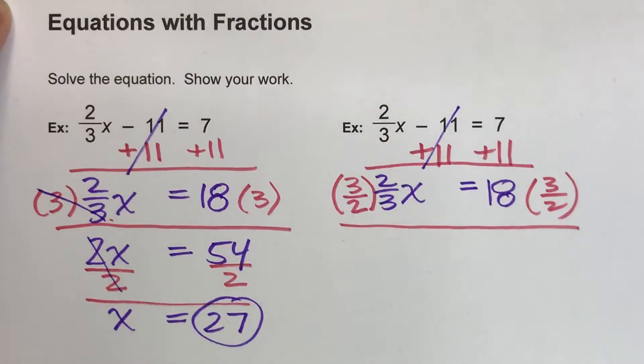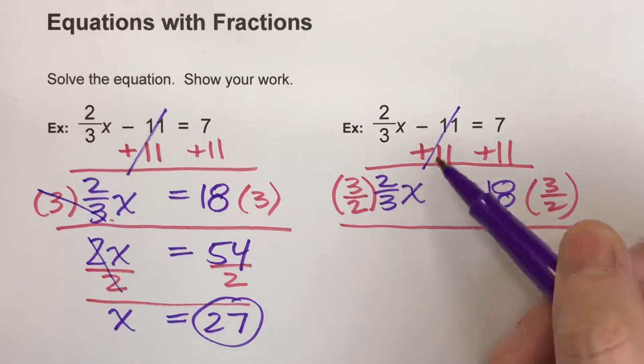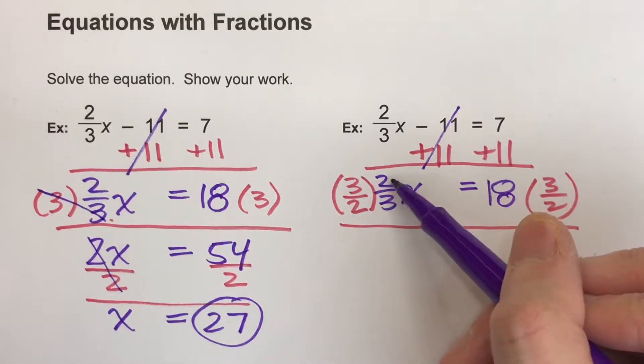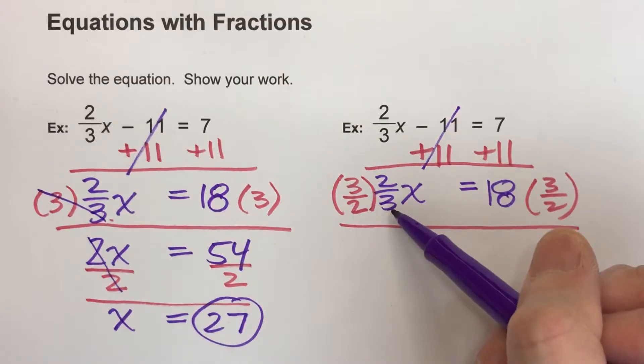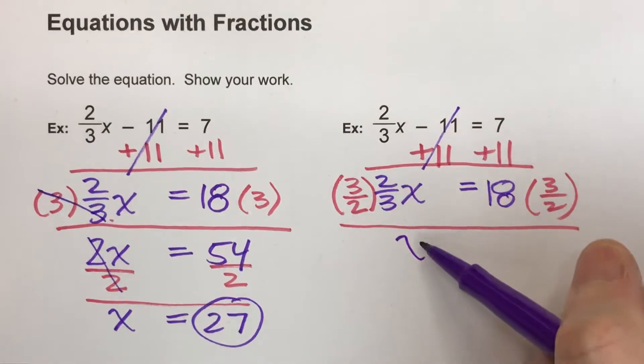Now, here's why this works. If you multiply fractions, you do the top times the top, and the bottom times the bottom. 3 times 2 is 6 for the top, 2 times 3 is 6 on the bottom, so we end up with 6 over 6, which is 1 whole.